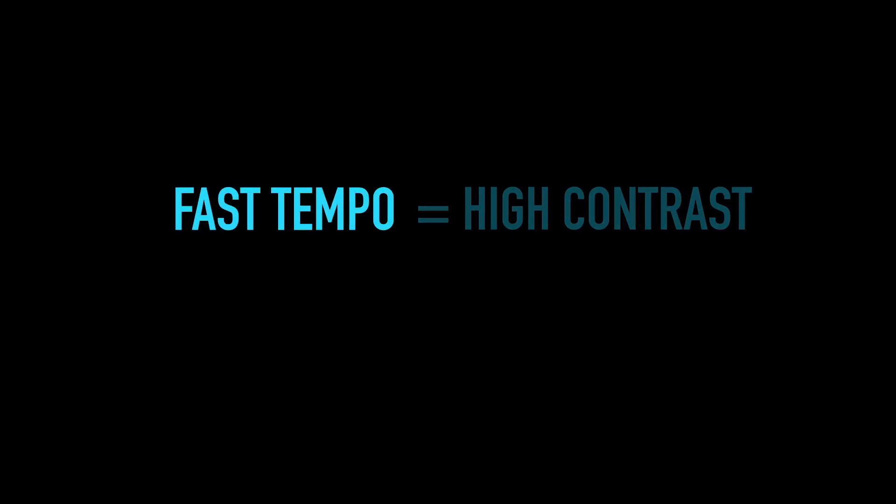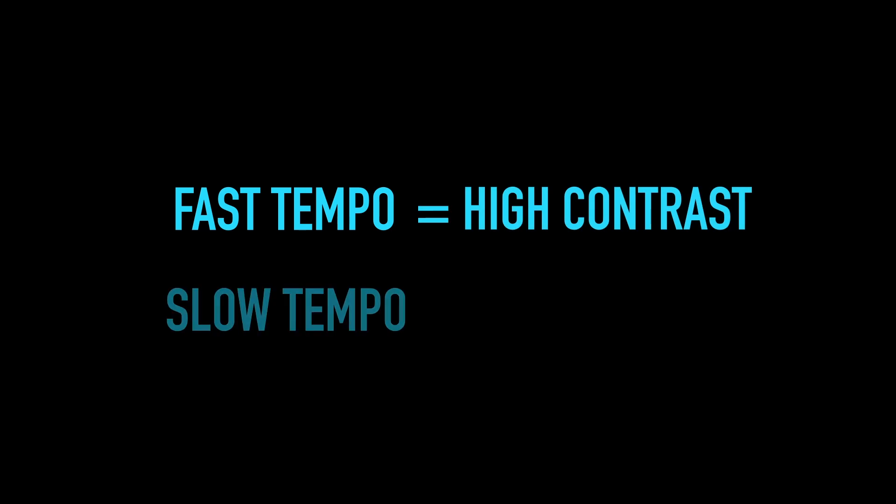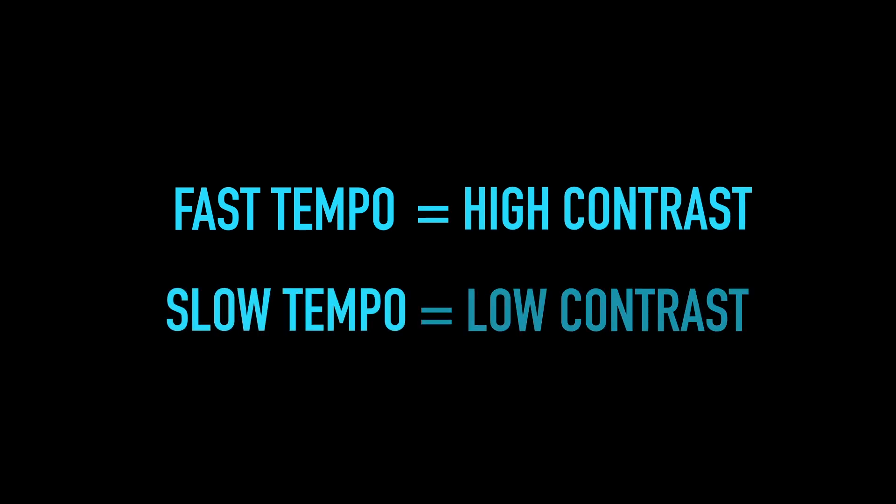The higher the contrast, the more energy, the more tension, the more attention we are drawing to the look or to an image. The emotion of high contrast is very high energy, and the emotion of low contrast is very low energy. The best way to understand it is to compare it with music. In music, we have a tempo of a song — the faster the song, the more energy it has got; the lower the tempo, the slower it is, the less energy it has got.